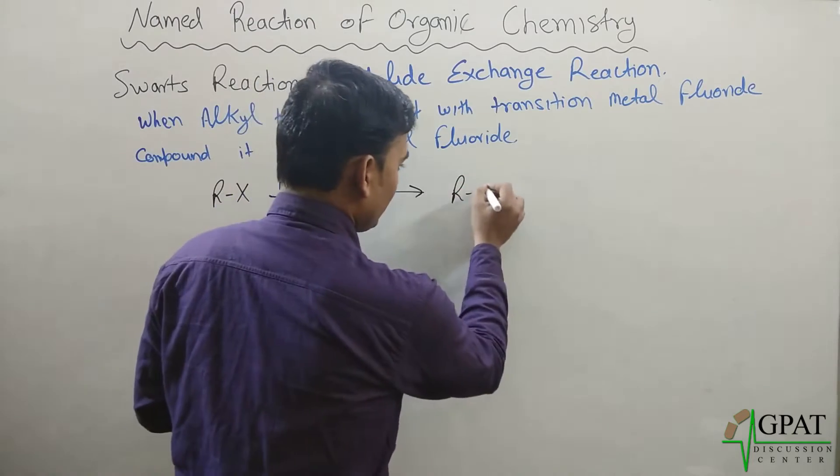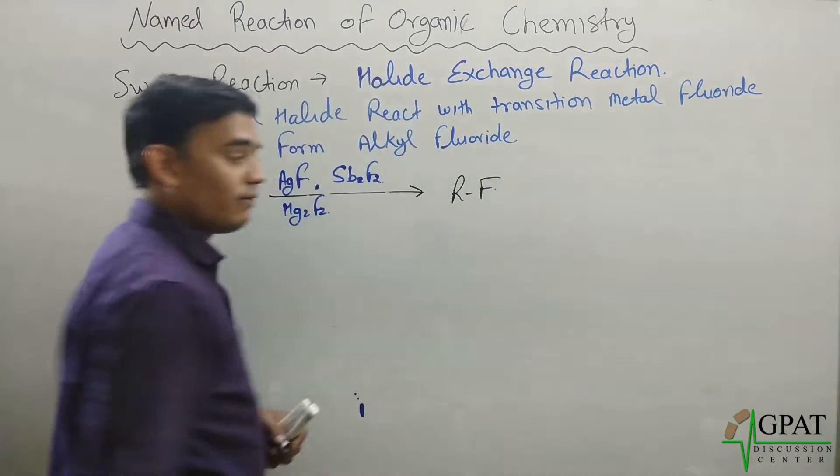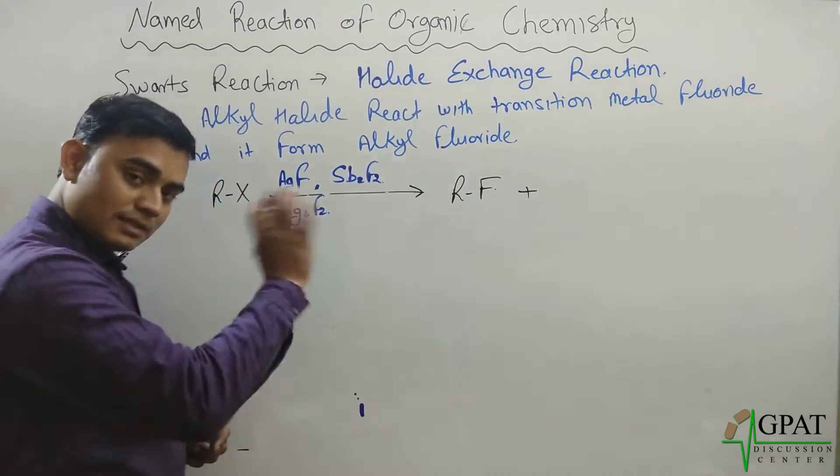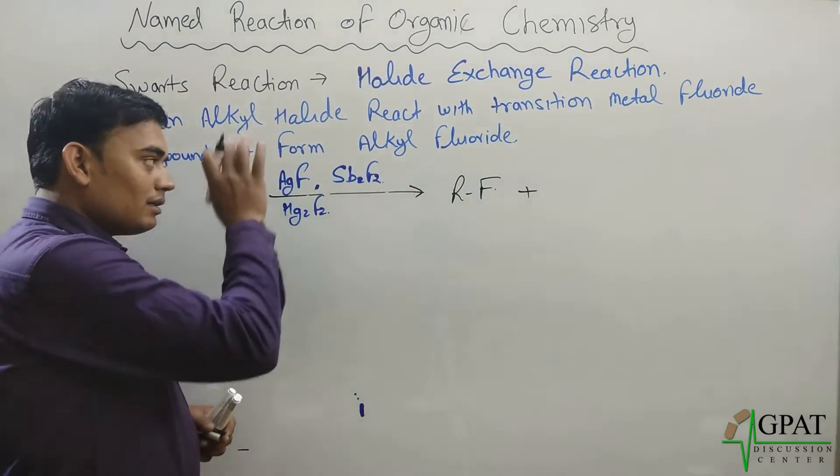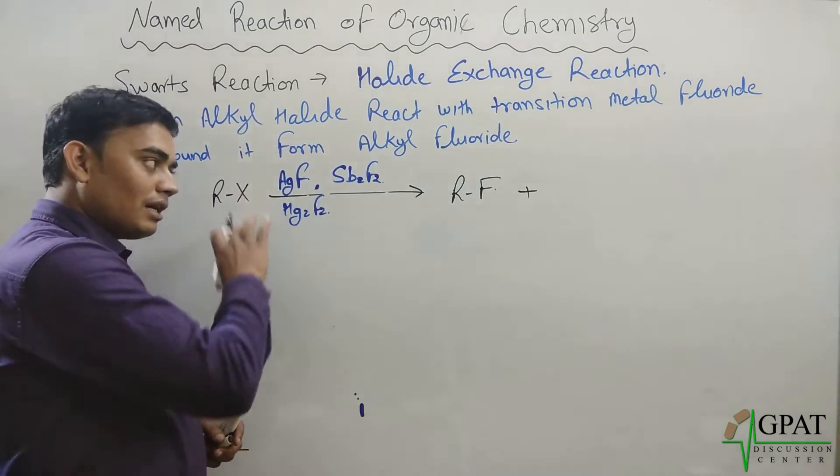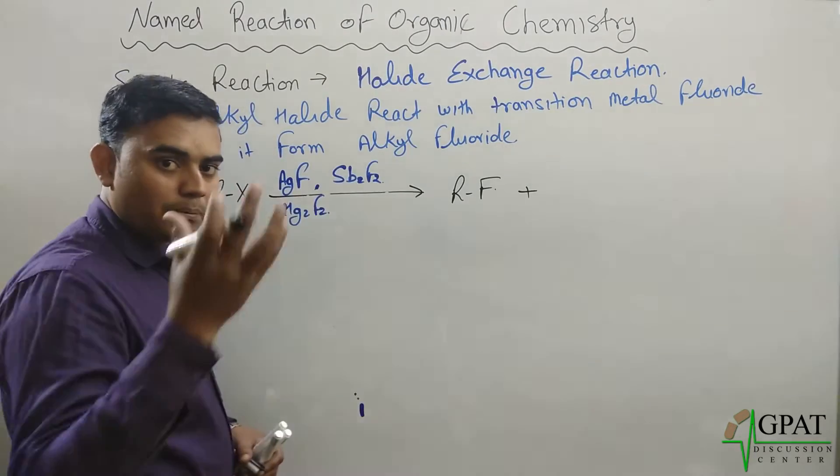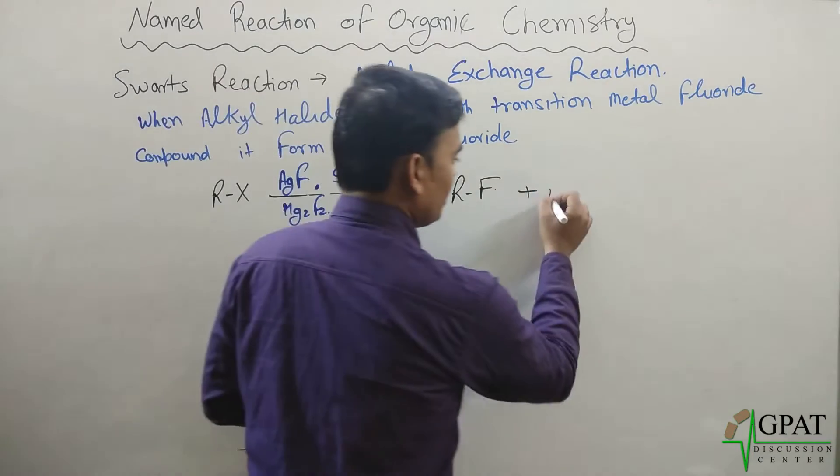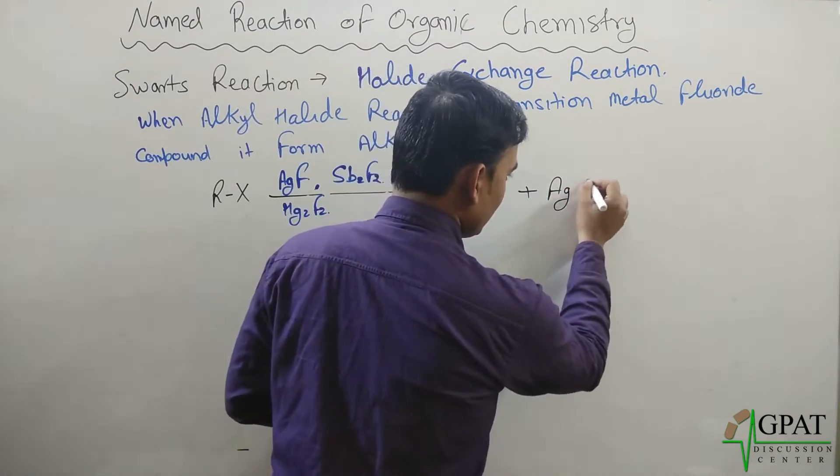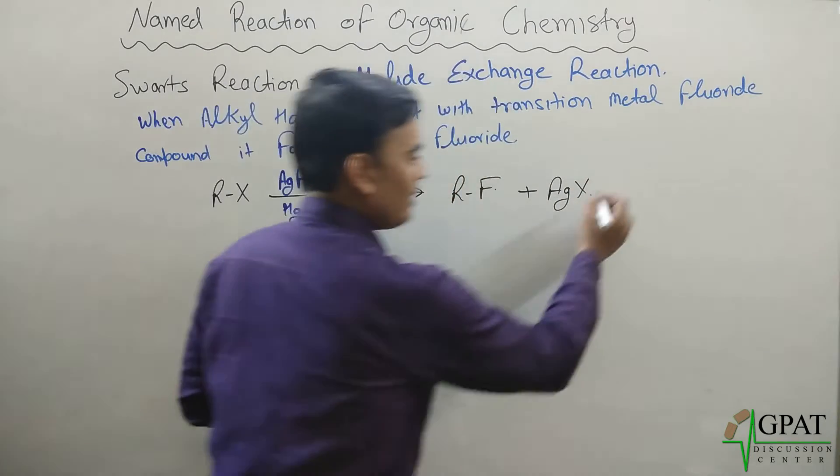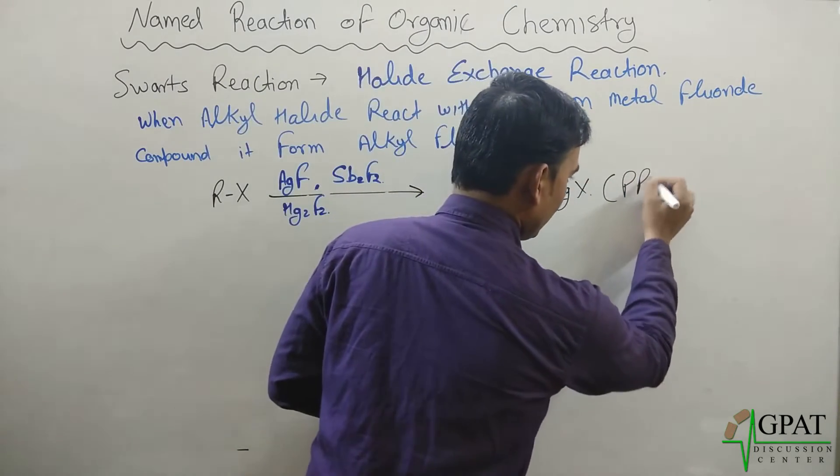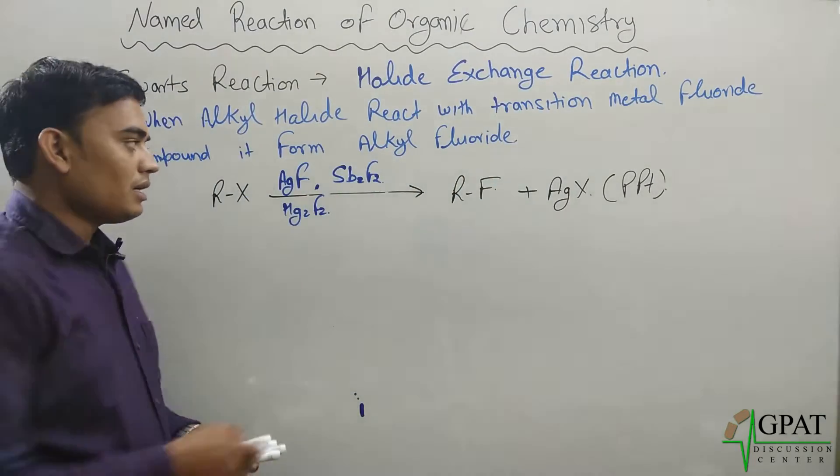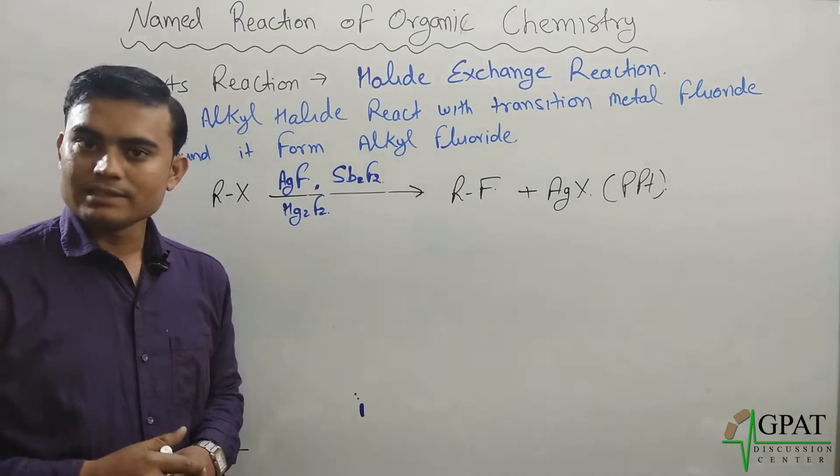Plus, simultaneously, the transition halide precipitate will form. Suppose, I am taking this silver fluoride, then here, AgX, it forms in the form of precipitate. Why this precipitation occurs and why this transition metal is necessary here?